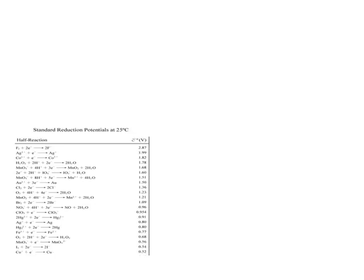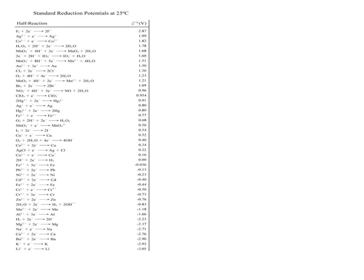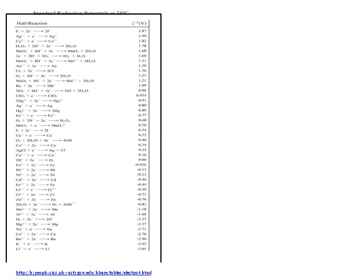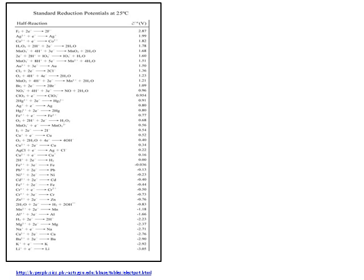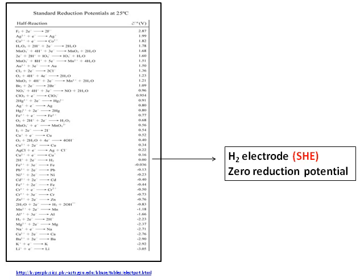To begin with, let's revise our standard reduction potential once more. For reference, the table is given here. In the middle we have the standard hydrogen electrode, SHE, with zero electrode potential. All values are reduction potentials. Above the hydrogen electrode we have positive values, and below the hydrogen electrode we have negative values.